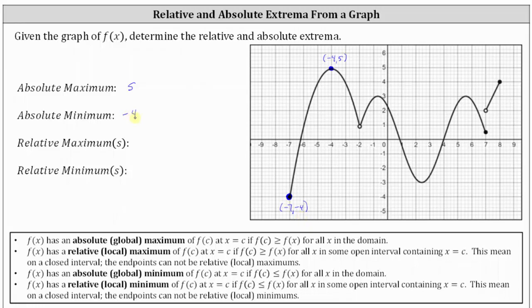Now let's review the definitions of relative maximum and relative minimum. f of x has a relative or local maximum of f of c at x equals c if f of c is greater than or equal to f of x for all x in some open interval containing x equals c. We identify the relative maximum by identifying the high points on the graph. However, x equals c must be in some open interval in the domain, meaning we must be able to approach x equals c from the left and right. Therefore, closed endpoints cannot be considered for relative maximums.